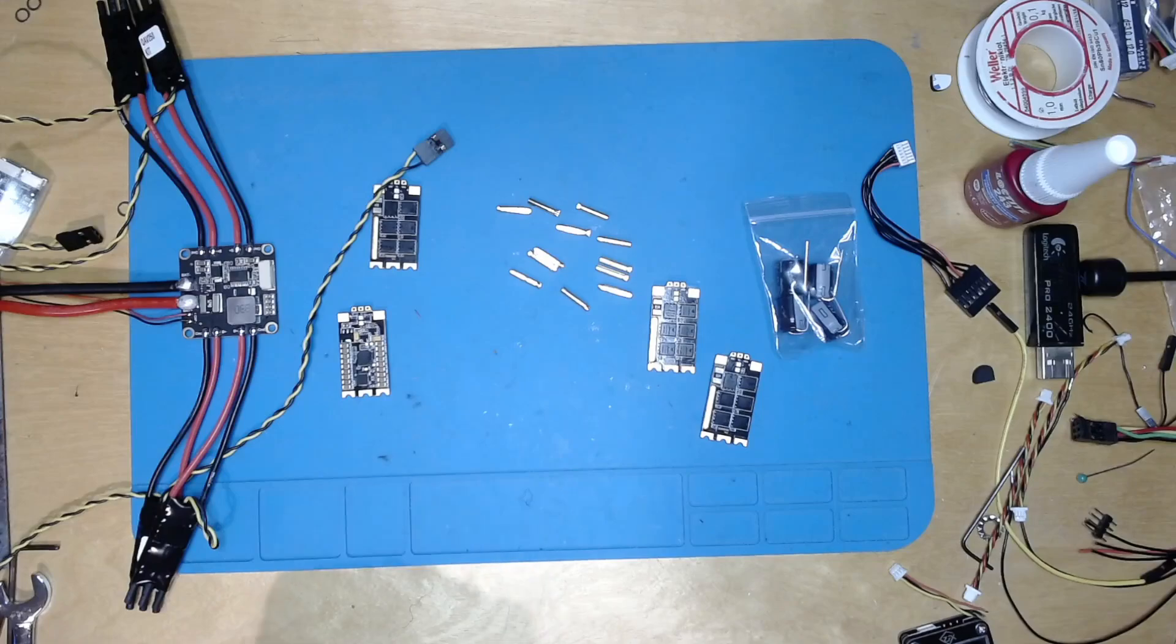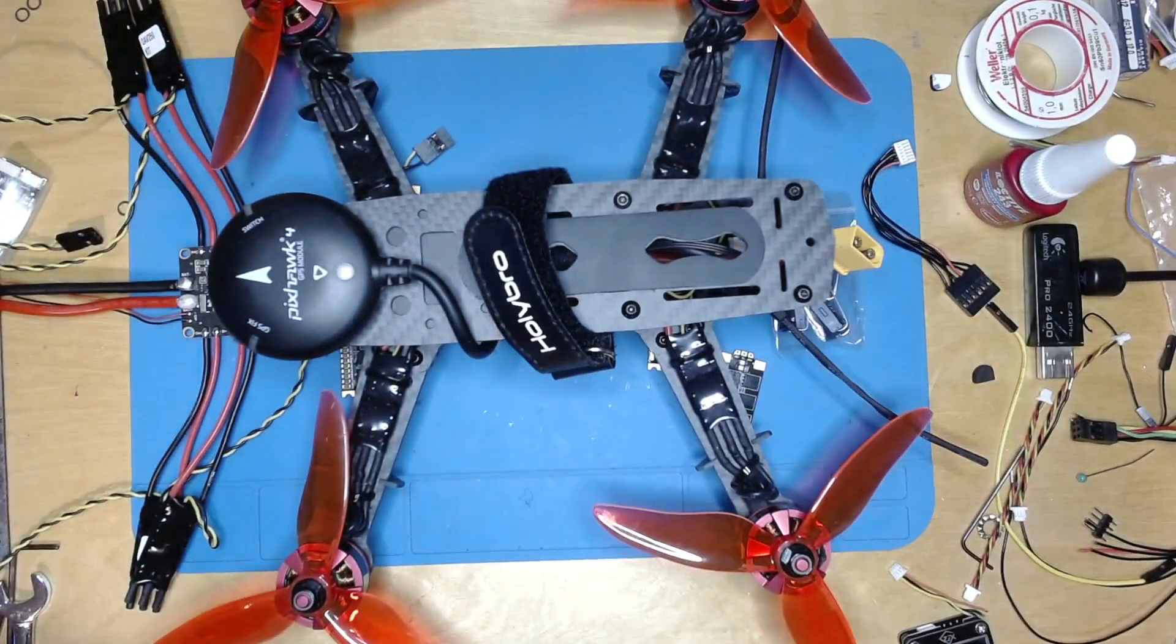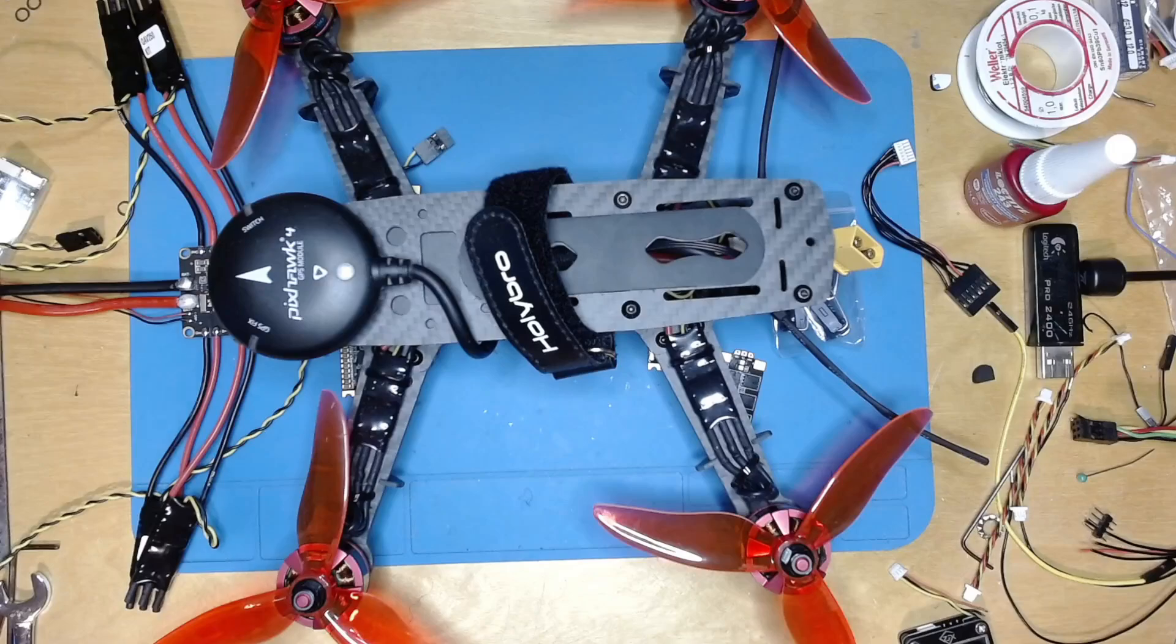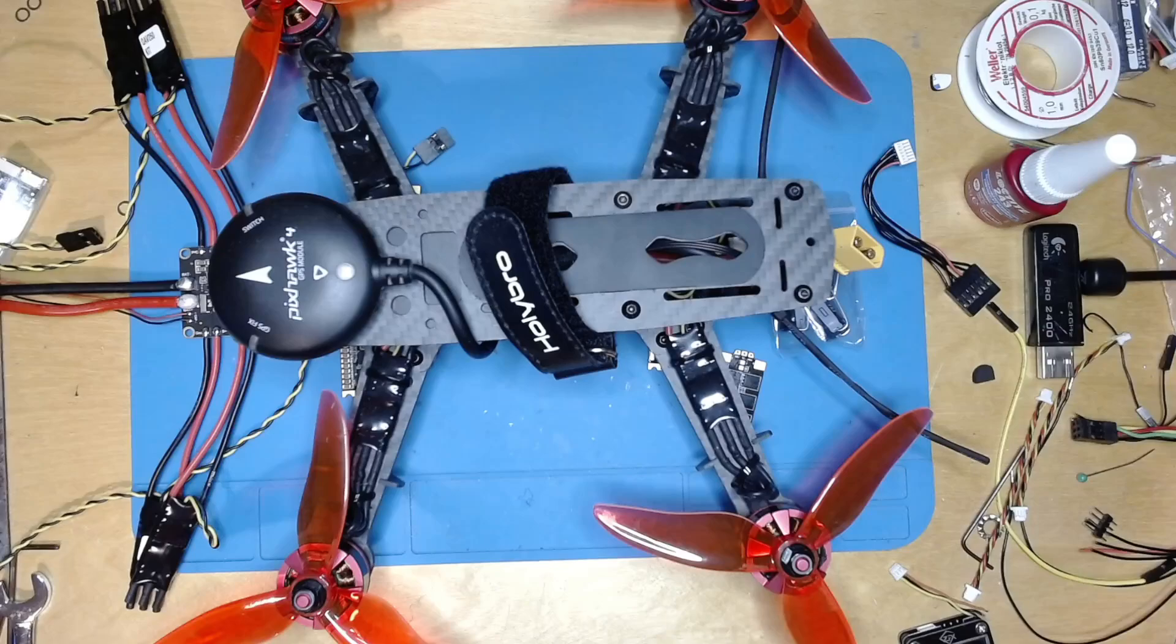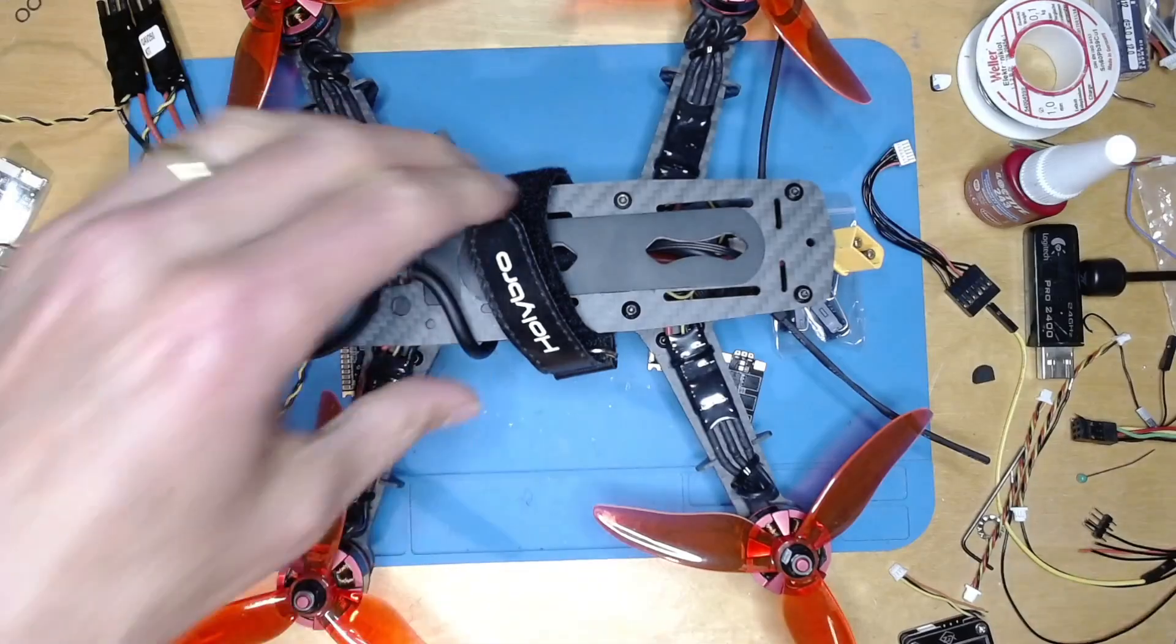AM32 is the open source competitor to BL Heli 32. Heli Bro has kindly sent me another of these kits - this is the QAV 250 that they sell. It's a kind of development platform, but it's also a small quad so you can crash it easily enough.